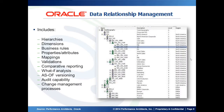Within DRM, we have hierarchies, dimensions, business rules, properties and attributes, mappings, validations, comparative reporting, what-if analysis, as-of versioning, audit capability, and with the new DRG module, change management processes.